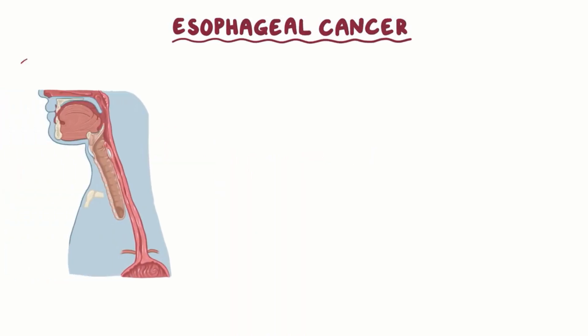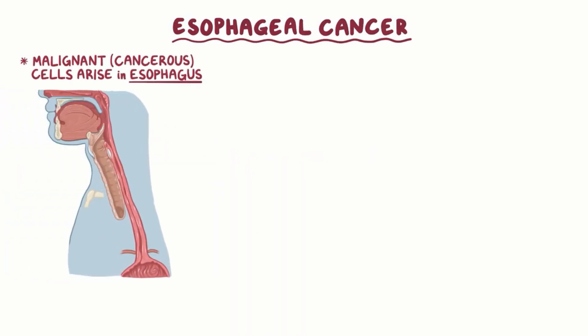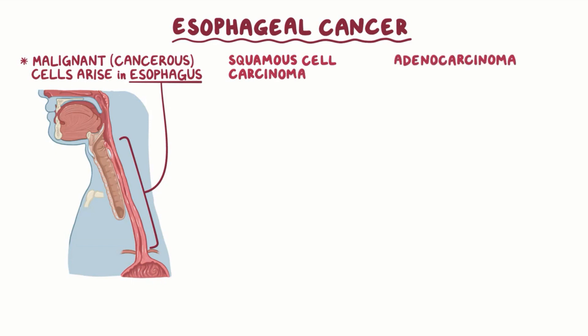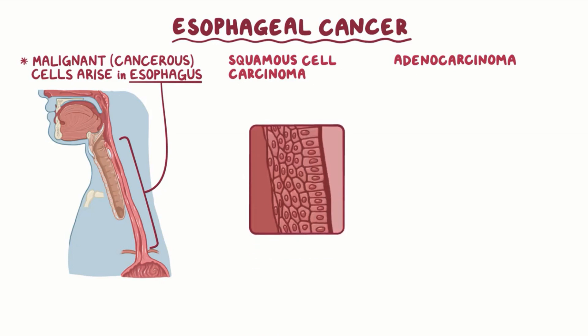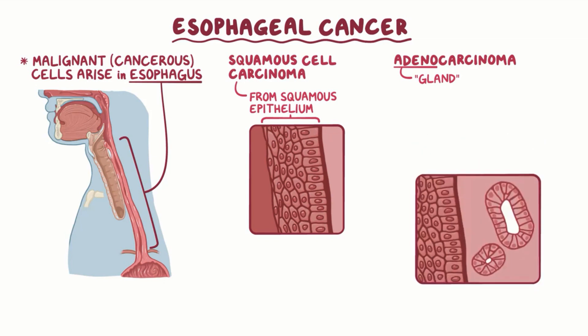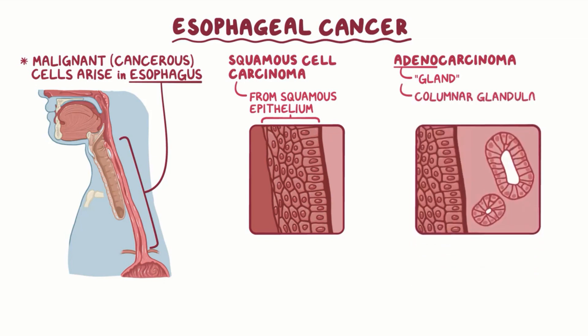Esophageal cancer is when malignant, or cancerous cells, arise in the esophagus. This cancer can appear in any segment of the esophagus, and it's further classified into squamous cell carcinoma and adenocarcinoma, depending on the type of cells it originates from. Squamous cell carcinoma arises from squamous epithelium, while adenocarcinoma arises from columnar glandular epithelium.